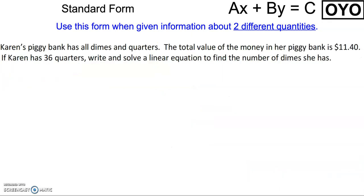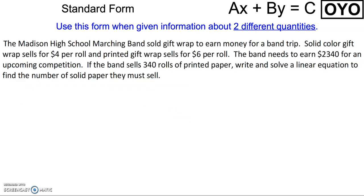The next two problems are on your own, talking about Karen's piggy bank and then the Madison High School marching band.